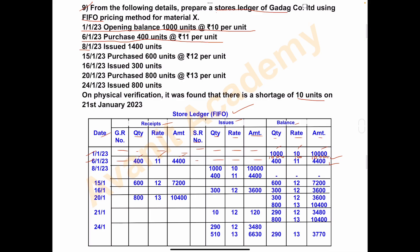Next, on 8th January 2023, issued 1400 units. Receipts column nil. Total units in balance: 1000 plus 400 = 1400. Under FIFO, first we will issue 1000 units at Rs. 10, total amount Rs. 10,000. Then take the remaining 400 units at Rs. 11, total amount Rs. 4,400. Total issued: 1400 units. Balance column is nil, because we had exactly 1400 units and issued the full quantity.